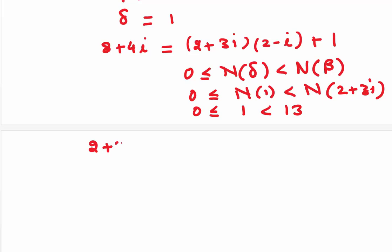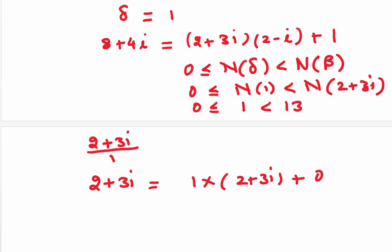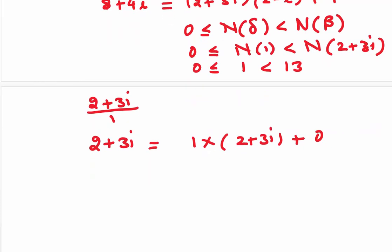Next step, we will divide 2 plus 3i by 1. This would give us 2 plus 3i is equal to 1 into 2 plus 3i plus 0. So, our process stops. We are using Gaussian division lemma. Let me write both the things together. So, we have 8 plus 4i is equal to 2 plus 3i into 2 minus i plus 1.